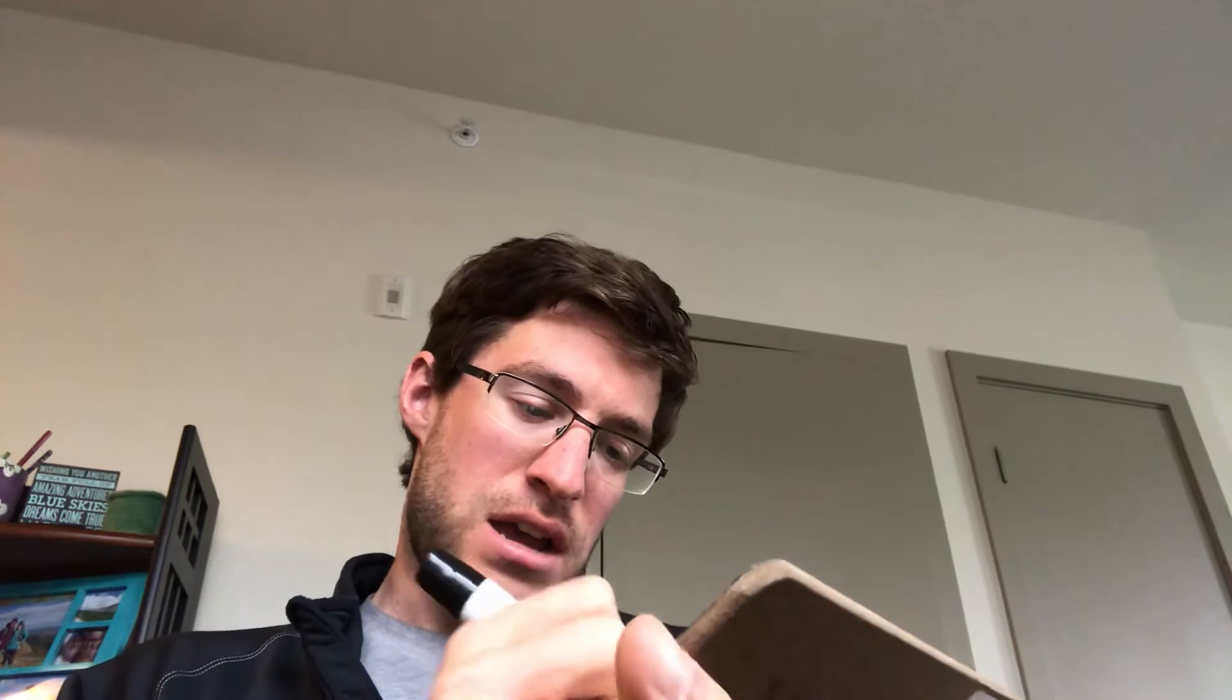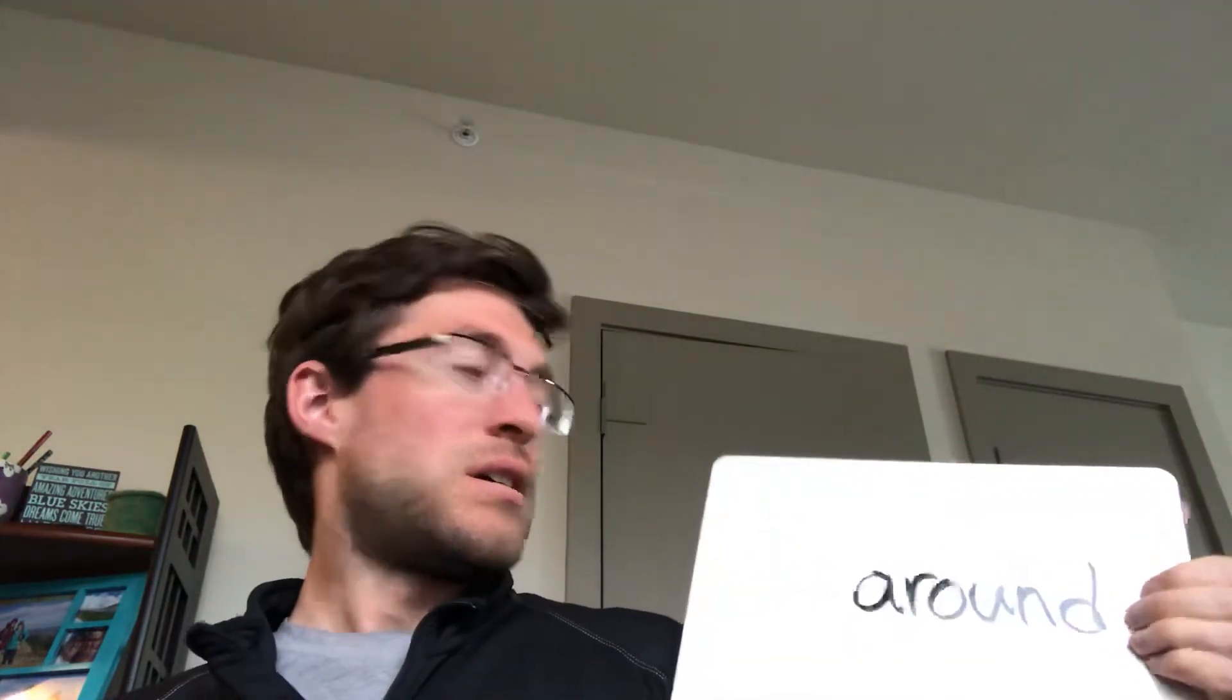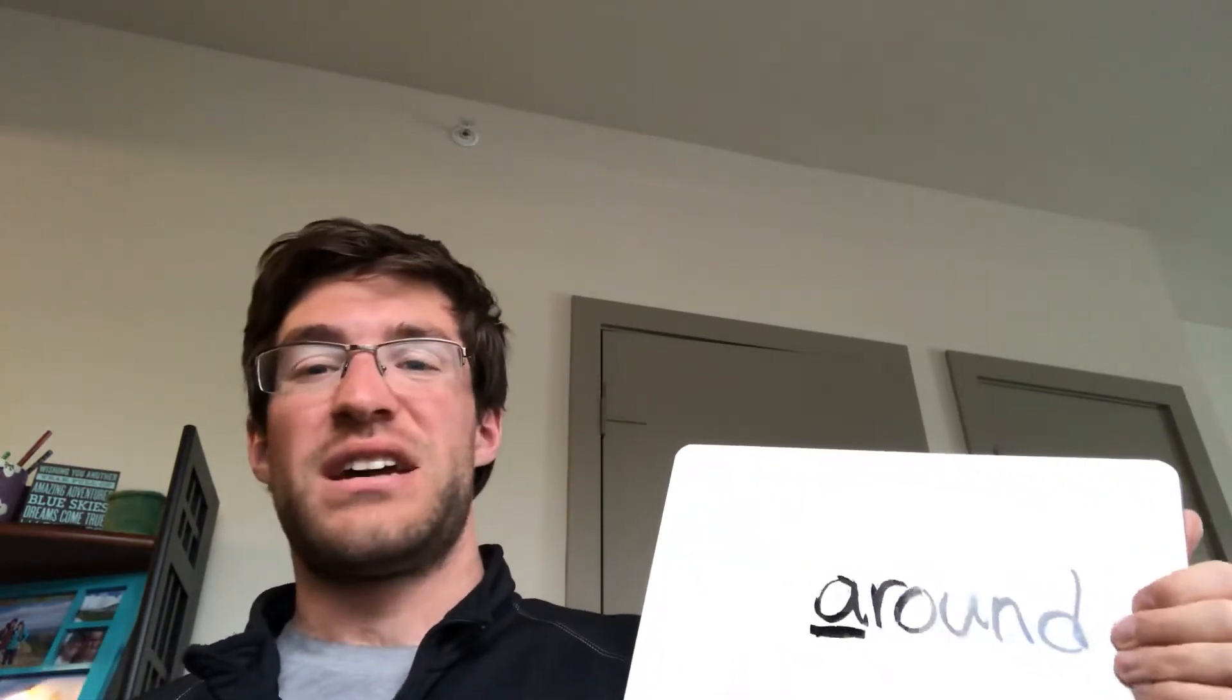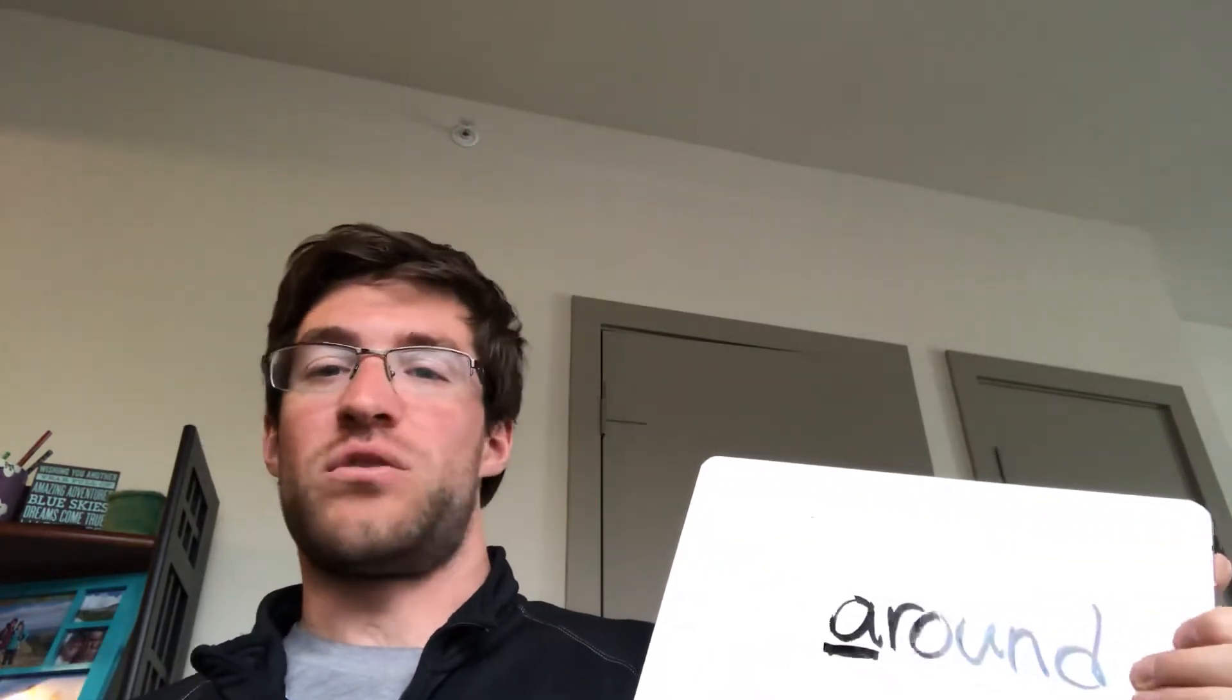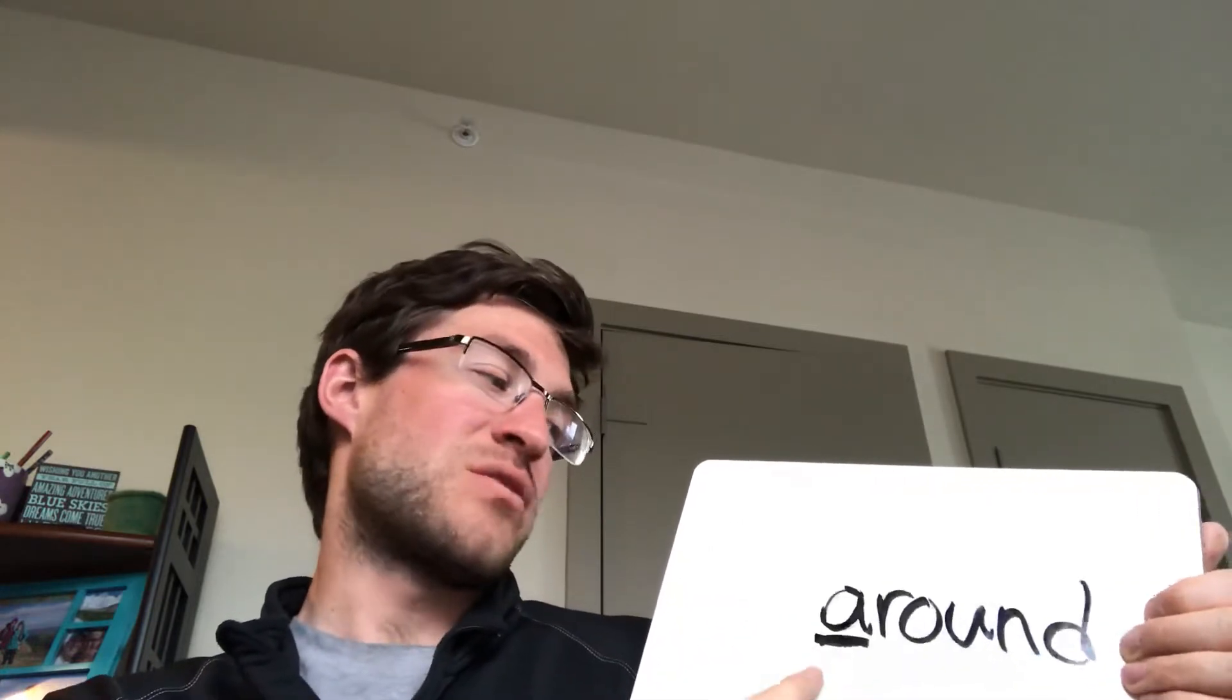Now our second word is 'around.' I am going to go around the pile of dog poop because I don't want to step in it. Around. Now tricky parts about around: well, at the beginning it's actually an A, not a U, even though it's saying 'uh' like umbrella. It's actually an A, so it's around. Around starts with an A—that's tricky.